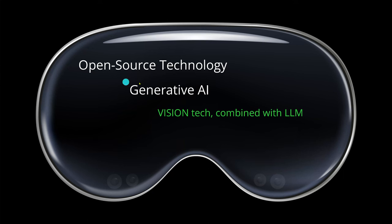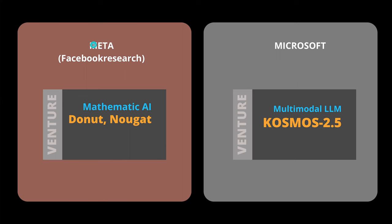Hello community! What open source technology can you use today? We're in the area of generative AI, looking at vision technology that we can combine with our LLMs. In my last video I showed you the technology available from Meta, and I told you about Doughnut and about Nougat, the latest software development which Meta calls Nougat.